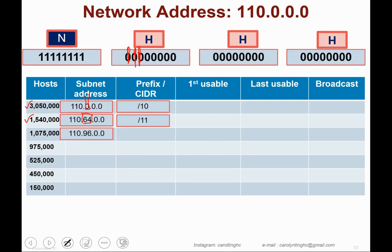To cater for 1,075,000 hosts, we again use slash 11. Two to the power of 5 is still 32. Adding 32 to 96 gives 128, so the next subnet address is 110.128.0.0.